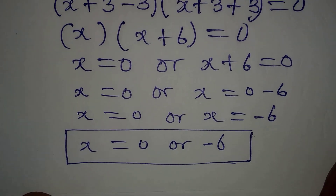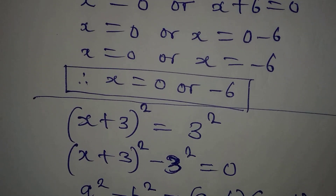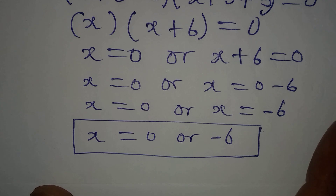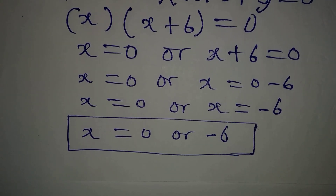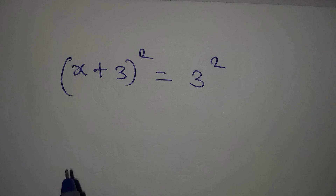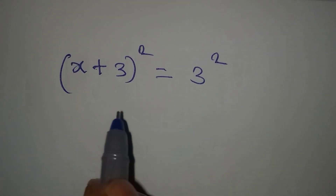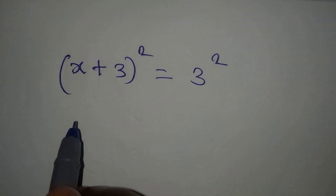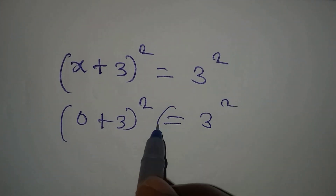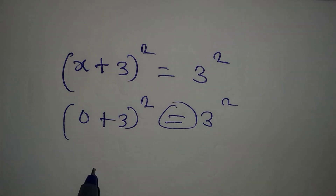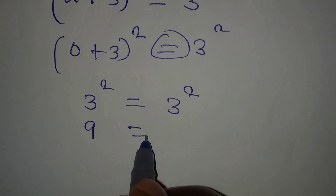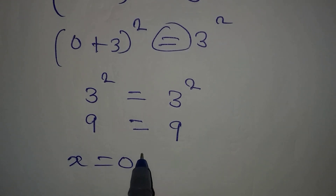This is what we had when we used the first method — x = 0 or x = −6. Now I want us to substitute back into the equation to verify. Putting x = 0: we get (0 + 3)² = 3², which gives 3² = 3², so 9 = 9. x = 0 is satisfying.